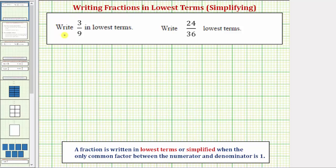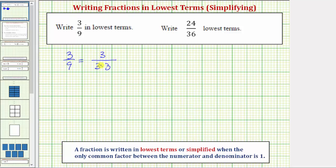Beginning with three-ninths, using prime factors, we determine the prime factorization of the numerator and denominator. Three is prime, so we leave three as it is. And the prime factorization of nine is three times three. The nice thing about the prime factorization method is that we always see the common factors that will simplify out. Notice how we have a common factor of three in the numerator and denominator.